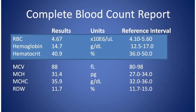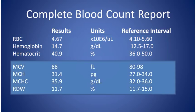The RBC red blood cell count, hemoglobin, and hematocrit, if abnormal, tell us whether we're dealing with an anemia or a polycythemia. Anemia is the most common disease affecting red blood cells; polycythemia — too many red blood cells — is much less common. Fatigue, shortness of breath, heart pounding, dizziness, and sweating can all be symptoms of anemia.